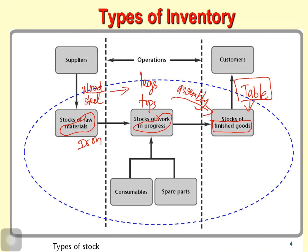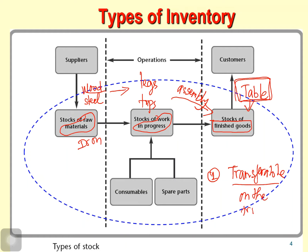Remember that we have three forms: raw materials inventory, work-in-process inventory, and finished products inventory. We also consider one more type of inventory — that is transferable products. For example, you have already finished the table and it is on the truck being delivered to the customer. That is another type of inventory.